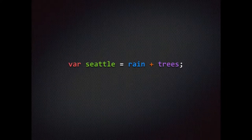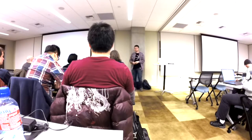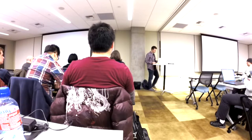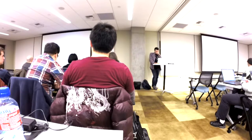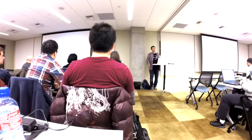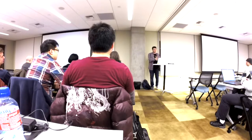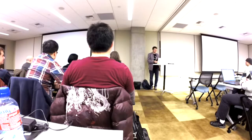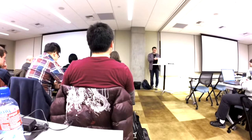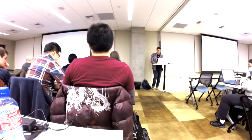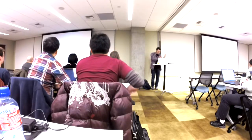We're going to make an AST out of this code. I can say certainly that Seattle has lots of rain and trees, so might as well save it to a variable. I spent a lot of time on that. Keynote really sucks at syntax highlighting — you have to do it by hand. There's a significant amount of inconsistency, as you can tell.